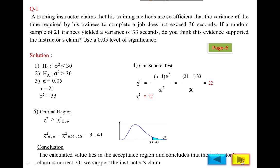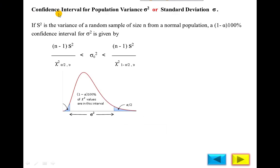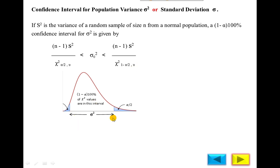Now for the next topic: confidence interval for population variance sigma square or standard deviation sigma. If s square is the variance of a random sample of size n from a normal population, the 1 minus alpha times 100 percent confidence interval for sigma square is given by the formula. We use n, sample size, and s square, and find values from the chi-square table using alpha 0.025 and 1 minus alpha 0.025, with the corresponding degree of freedom, to obtain the lower and upper acceptable values for variance.